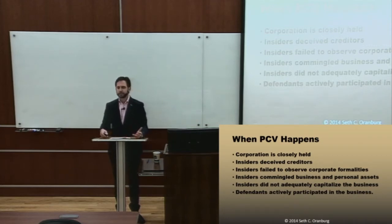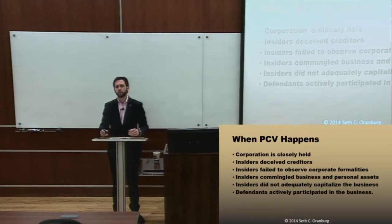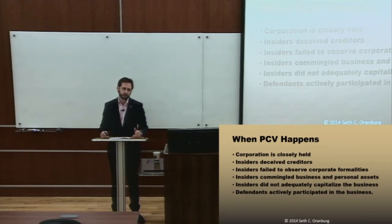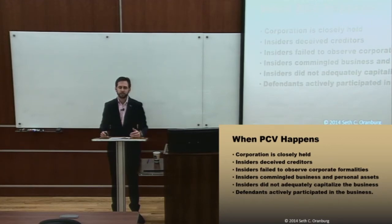Deceit is another factor — when the insiders deceive creditors or other parties, that's a good reason for veil piercing. If the shareholders are abusing the corporation for bad purposes, the courts are much more willing to disregard the corporate entity and its protections. Another reason is if the insiders fail to observe formality — if they don't have meetings, if they don't do things by board resolutions, if they don't have separate bank accounts. These things tend to show that the shareholders are using the corporation for their own purposes, not really for proper corporate purposes.